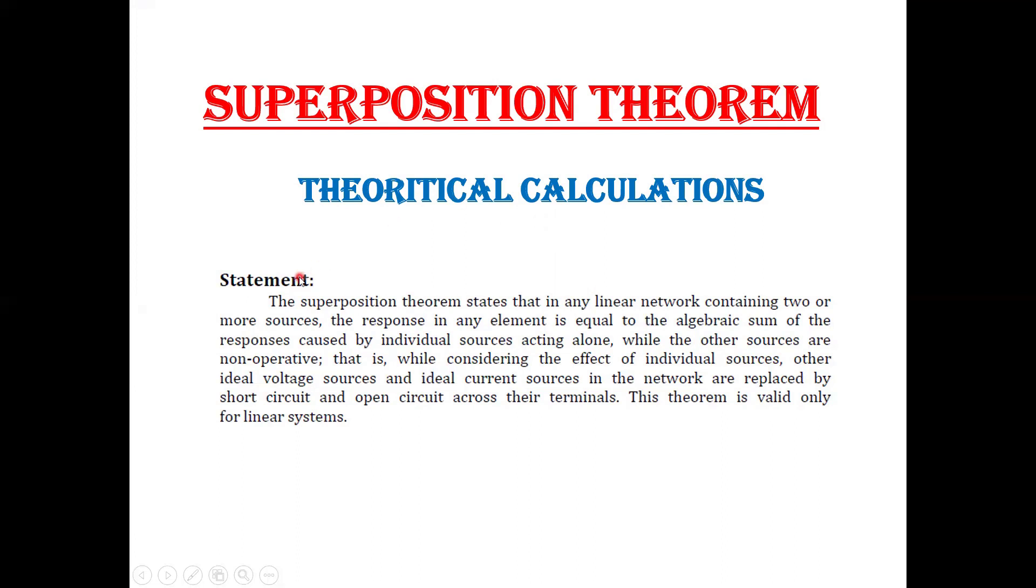The statement of superposition theorem: it states that in any linear active bilateral network containing two or more sources, the response in any element is equal to the algebraic sum of responses caused by individual sources acting alone. Only one source will be present at a time, while the other sources are non-operative or inactive. That is, while considering the effect of individual sources, other ideal voltage sources and current sources in the network are replaced by short circuit for voltage and open circuit for current across the terminals. This theorem is valid only for linear systems. This theorem is not applicable for power calculations.